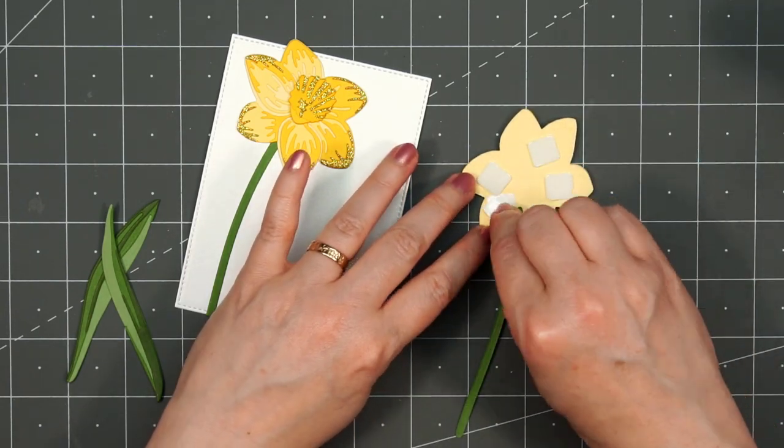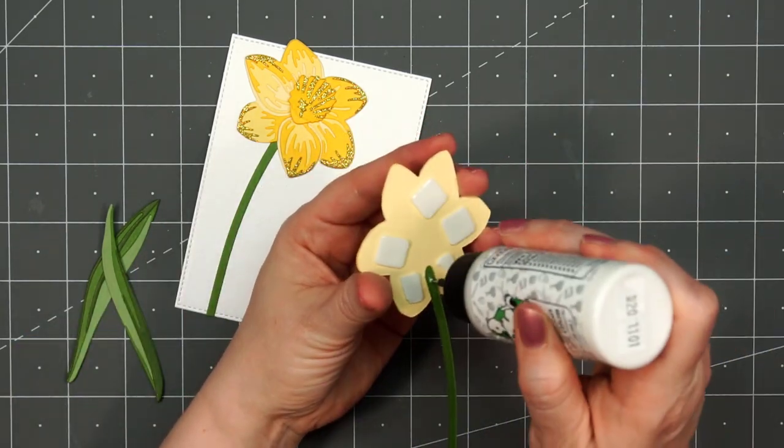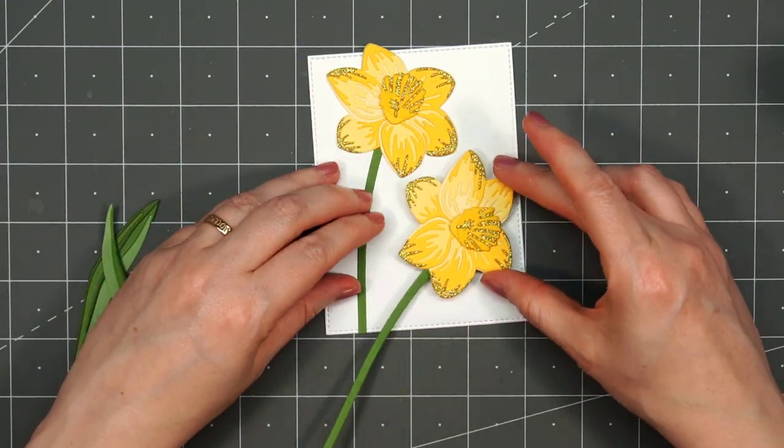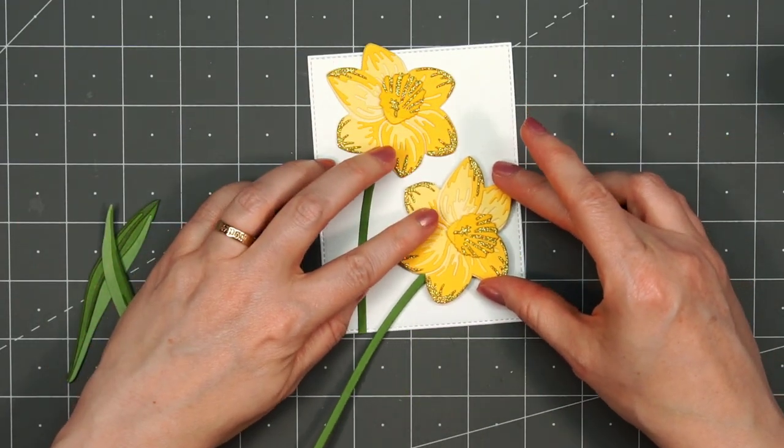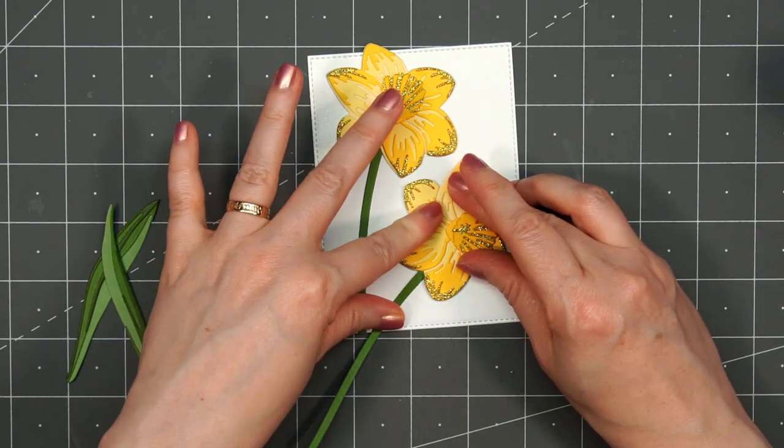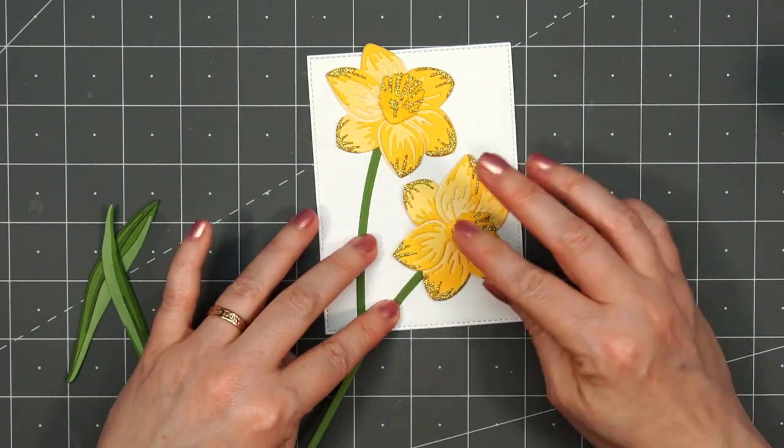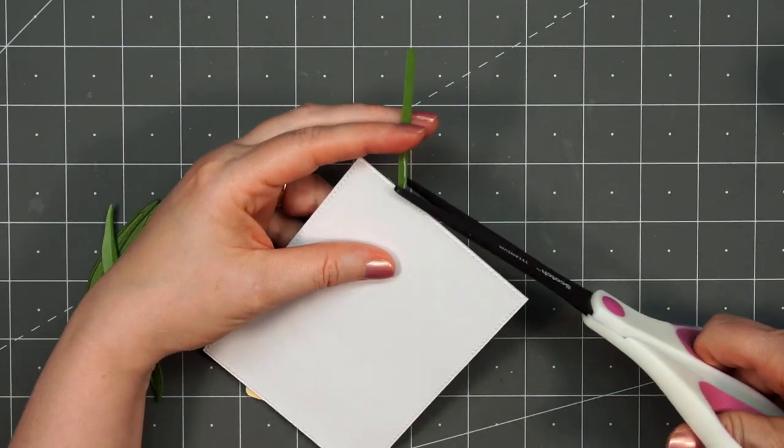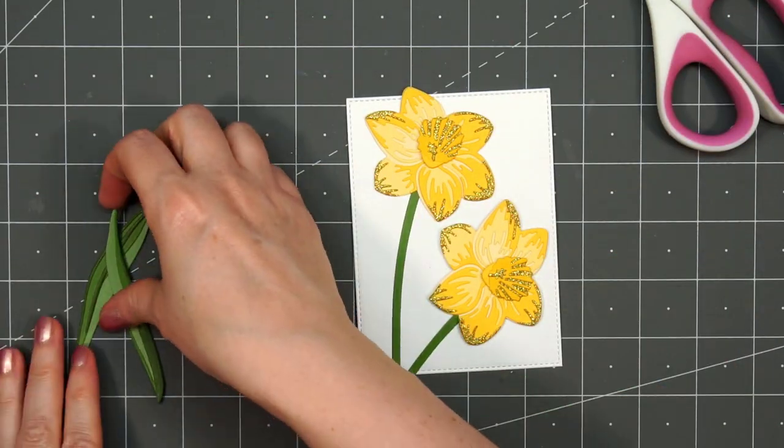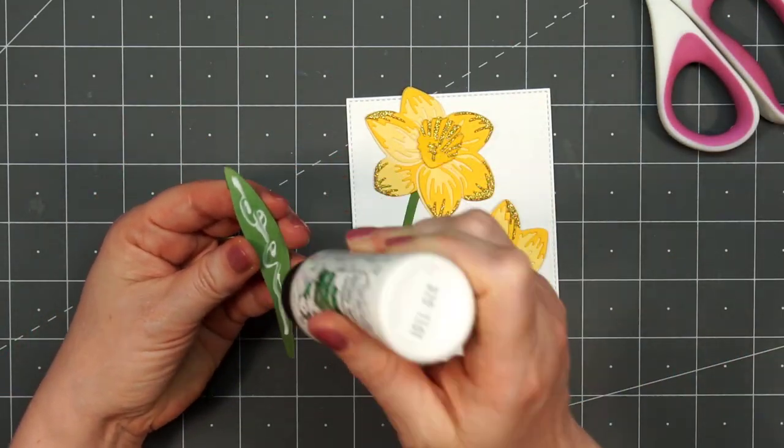Remove the release paper and adhere my flower in place. Just put a little bit of liquid adhesive on that stem. You're really only going to see a couple inches of the stem. The rest of it goes off of the card. Again, flip this over, trim off the extra stem, and now I can adhere both of the leaves.